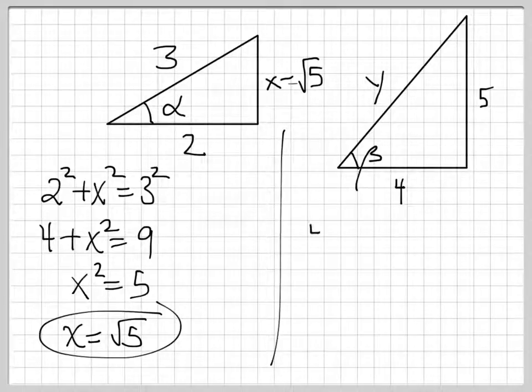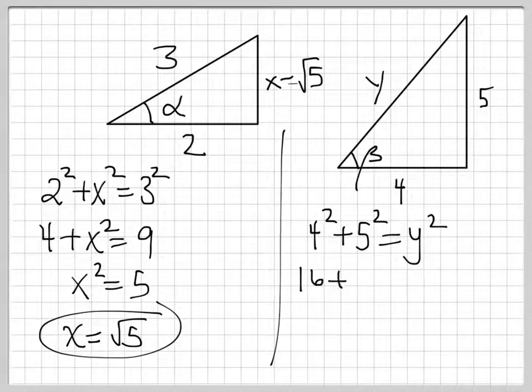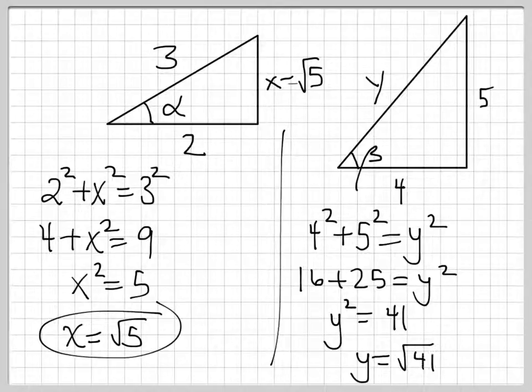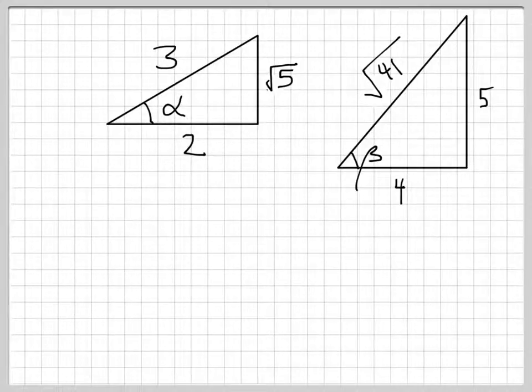Here, we have 4 squared plus 5 squared equals Y squared. And so 16 plus 25 is Y squared. And so Y squared equals 41, which means Y is the square root of 41. So now we have all of the sides labeled, and so let's talk about what we can do with that information.